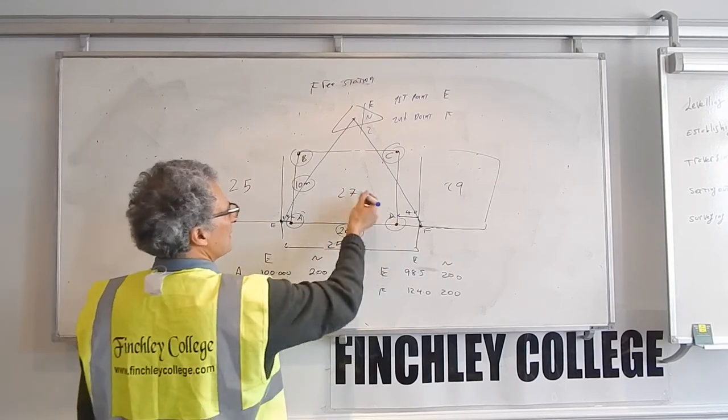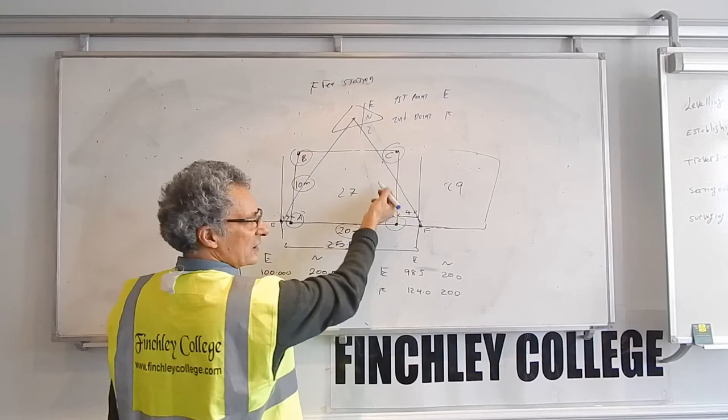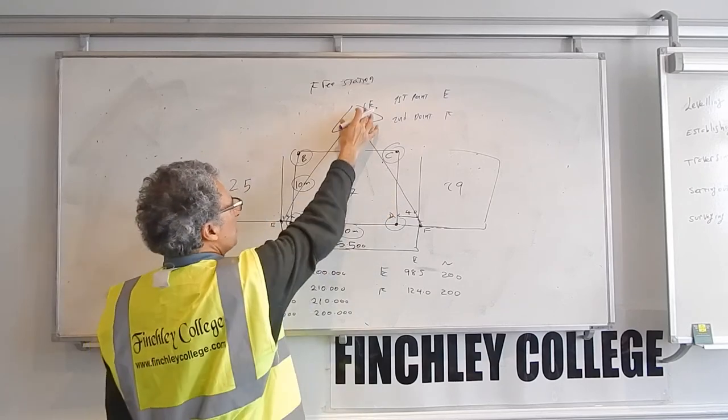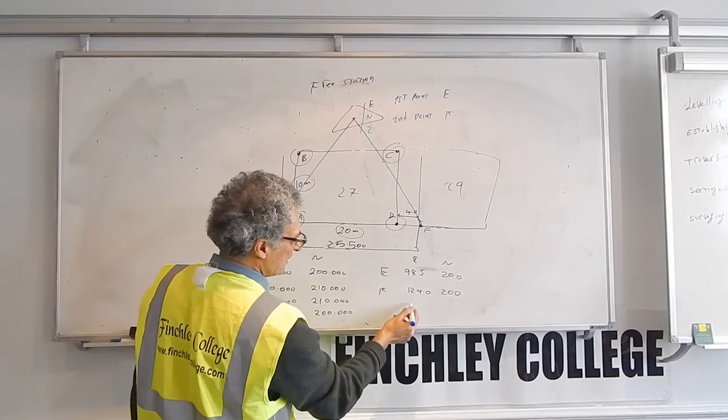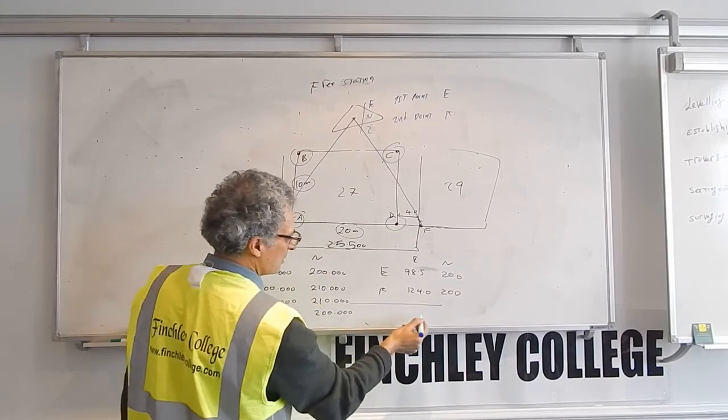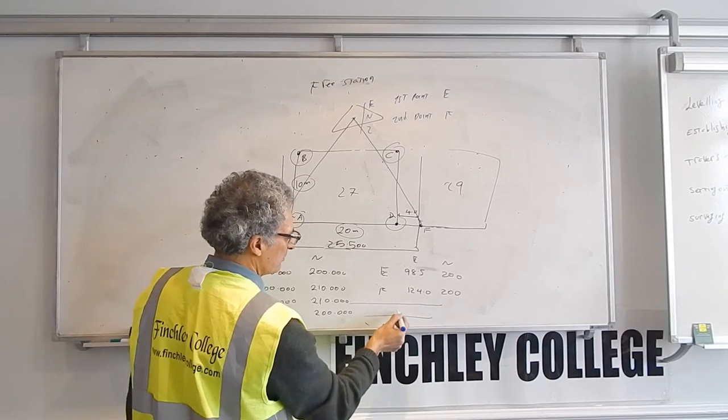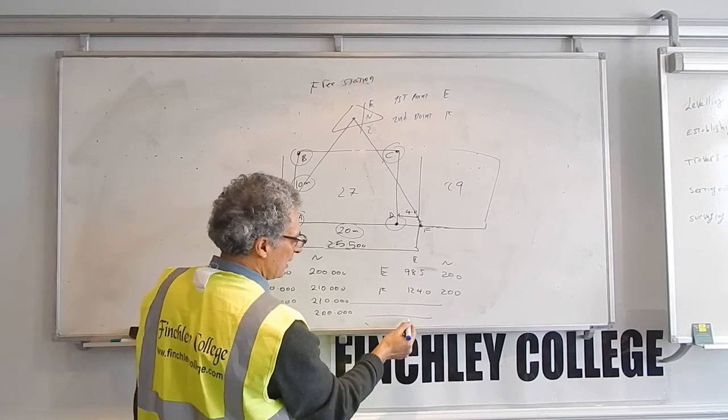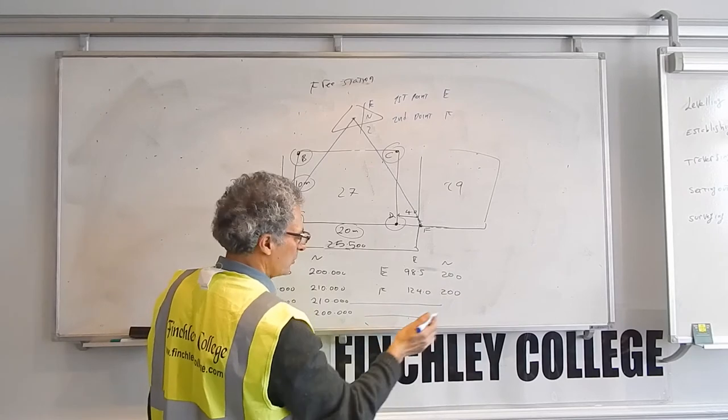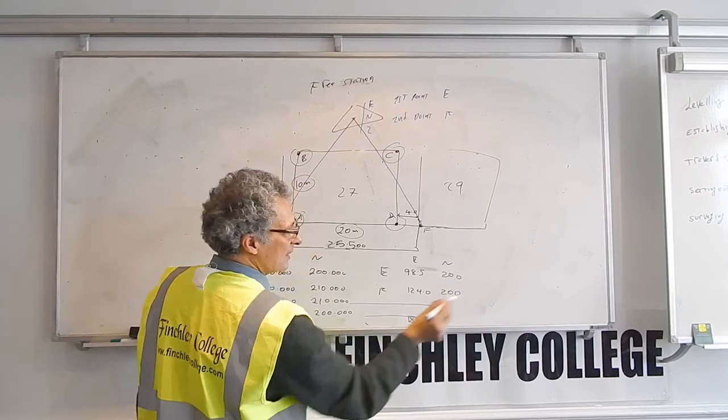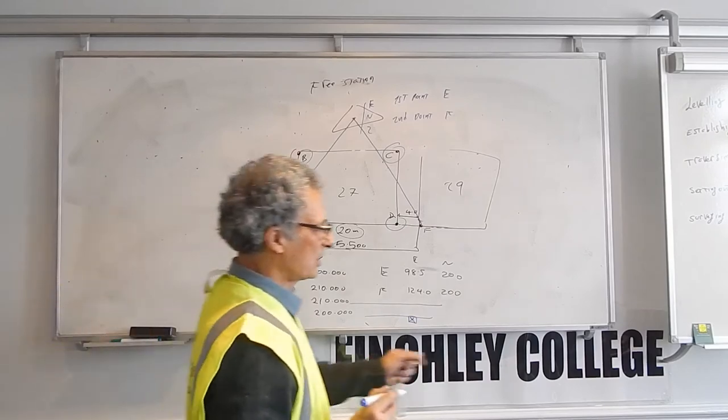And then if the building has different patterns, different corners, whatever, I can set up more points. Now at this point, once I've done it, I will establish more retros around the site. Say for example, on this side of the road there's a footpath, this is a road, there's a footpath. I go maybe on a lamp post or on a wall or something, I'll put a retro target.